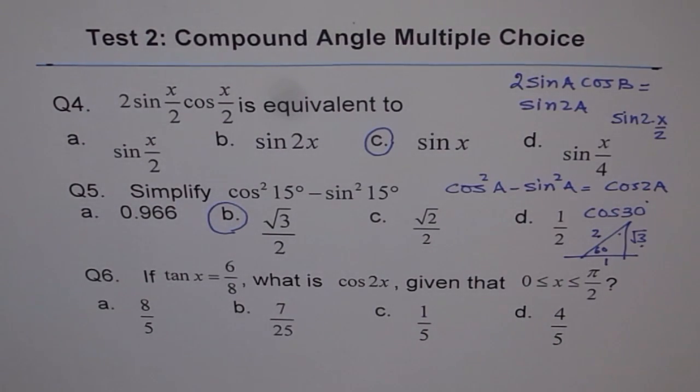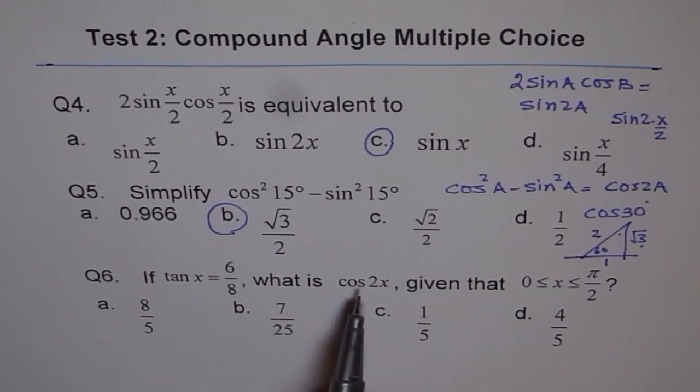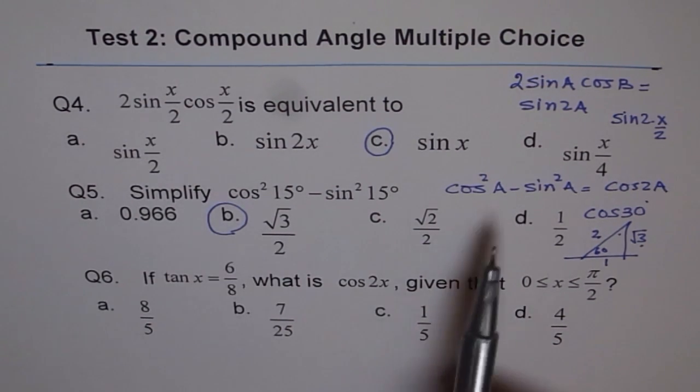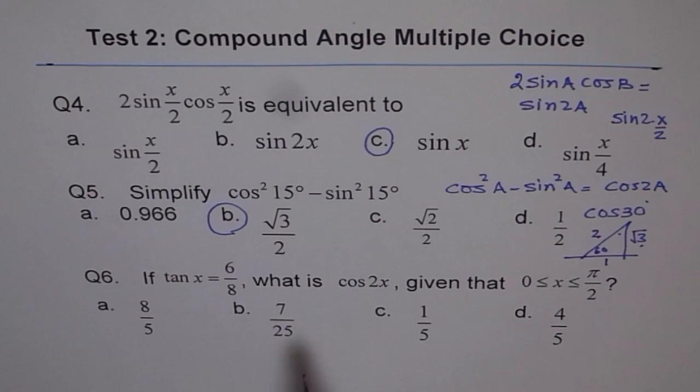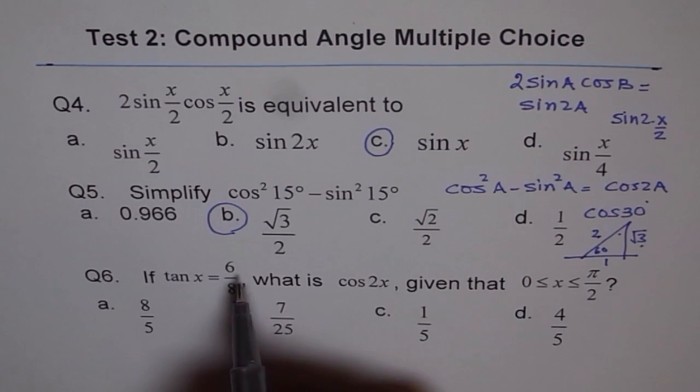Question 6: If tan(x) equals 6/8, what is cos(2x), given x is between 0 to π/2? We will use this formula: cos(2x) is cos²x - sin²x. But we need to find what cos and sin are. We know what tan is, so we can make our triangle.